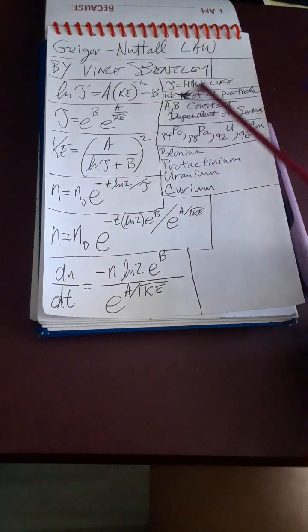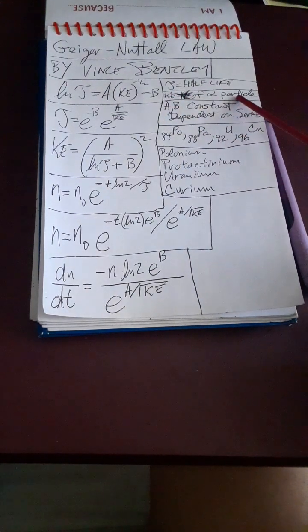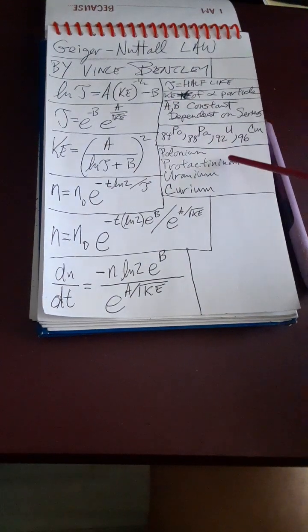Here I write tau is the half-life, kinetic energy of the alpha particle. A and B are constants dependent on the radioactive series.